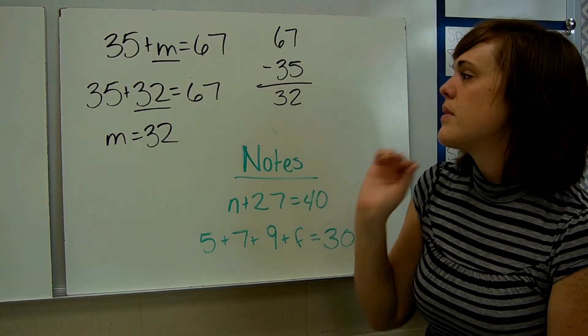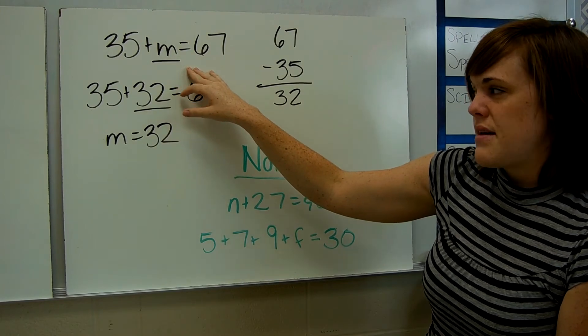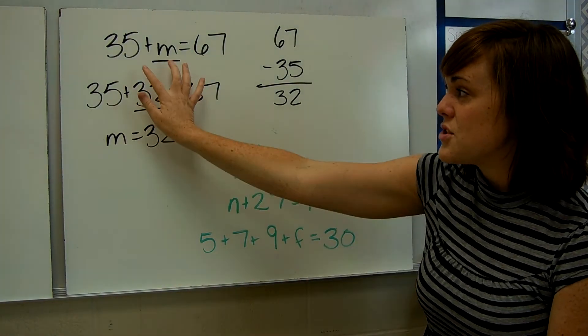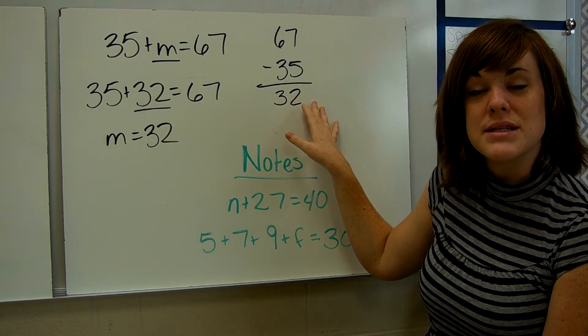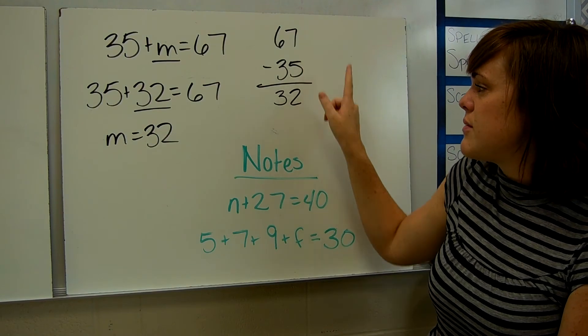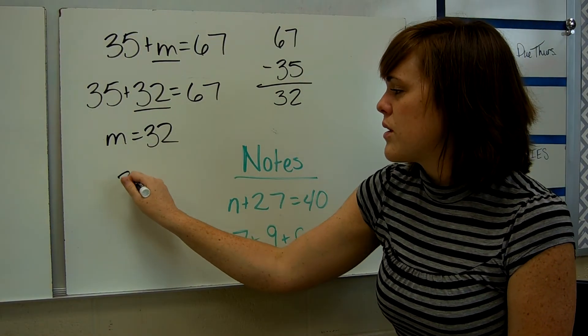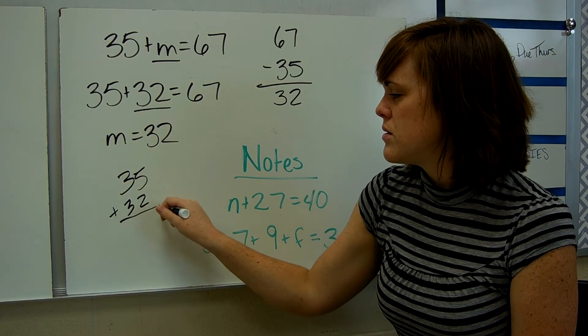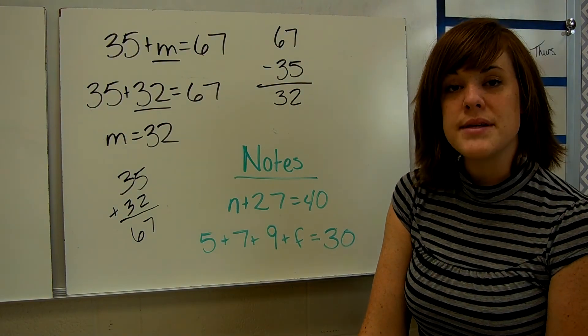One more example. Here we have 35 plus M is 67. We're going to solve it the same way. Since these two are added together, we're just going to take away the 35 and see what's left. So 67 minus 35 is 32. Put it in there. Check your work. 35 plus 32. 7, 6. We're good. So M is 32.